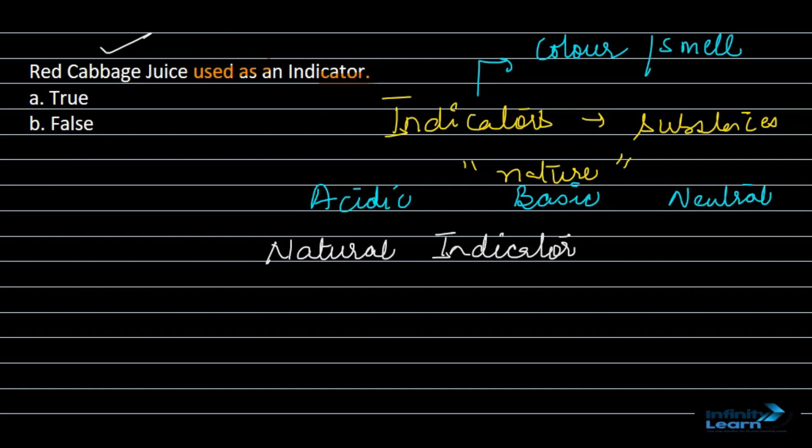When we treat red cabbage juice with bases, its color changes to blue. When we treat red cabbage juice with acids, its color changes to red. This change in color,